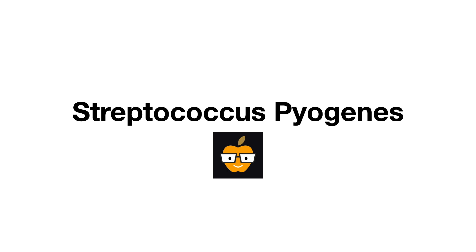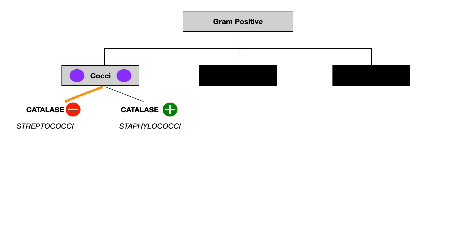If you're going in order in the microbiology series, you'll recall we've been following a flow diagram talking about gram-positive bacteria, separated into categories depending on shape. We've only talked about cocci so far — round or spherical shaped bacterial pathogens — and within cocci we separate staph from strep depending on whether it's catalase positive (staph) or catalase negative (strep). We're continuing by talking about catalase negative strep.